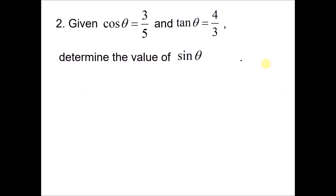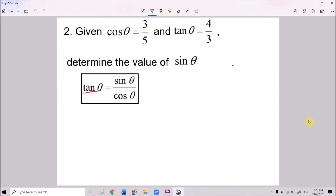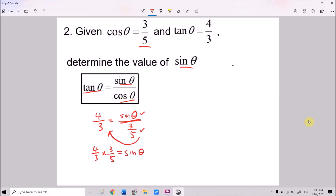Question 2: Given cosine θ = 3/5 and tan θ = 4/3, determine the value of sine θ. Since this question relates cosine θ, tan θ, and sine θ, we use the formula: tan θ = sin θ / cos θ. So 4/3 = sin θ / (3/5). Moving 3/5 across, it becomes multiplication: sin θ = 4/3 × 3/5. The 3s cancel, giving sin θ = 4/5.